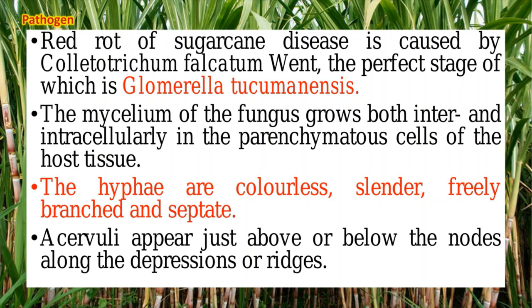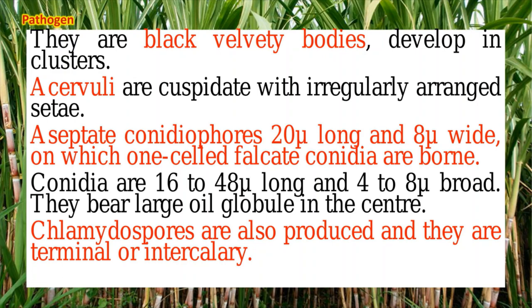The mycelium of the fungus grows both internally and externally inside the parenchymal tissue, and may be inter- or intracellular in nature. The hyphae are colorless, slender, freely branched, and septate. They produce acervuli appearing on the nodes along depressions or ridges. The acervuli are black velvety bodies that produce conidiophores bearing one-celled falcate conidia. In addition to conidia, chlamydospores are also produced and can cause infection.